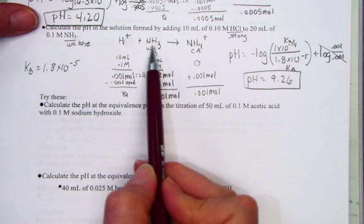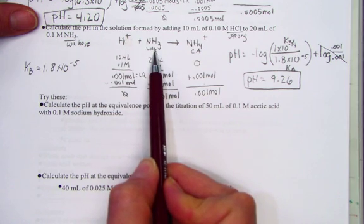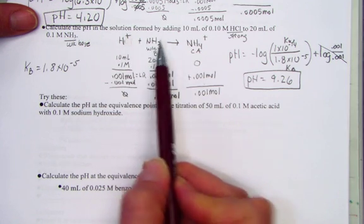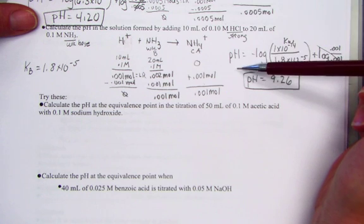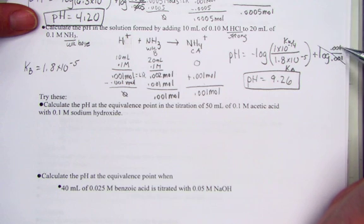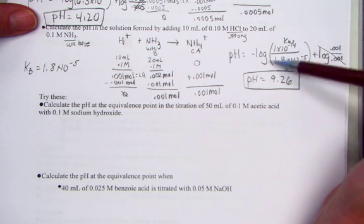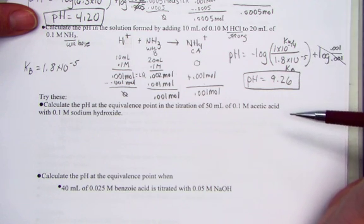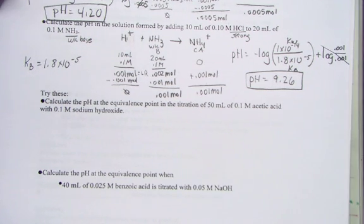So here we had an example of strong acid with weak base, again Henderson-Hasselbalch. But just to compare, I'm noticing that if I'm given a weak base, it's still a base over acid conjugate ratio, but the only difference is that I had to flip Kb to Ka to get Henderson-Hasselbalch back to work.